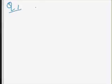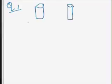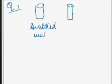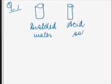Question number one is that you had been provided with two test tubes. One of them contains distilled water and the other contains an acid solution. Suppose this is our test tube number one and this is test tube number two. The first test tube contains distilled water and the second one contains acid solution.